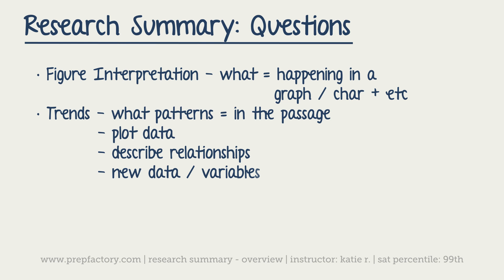So for trends, you need to be able to figure out: as one thing increases, what happens to another? If I double this, do I double something else? Understanding relationships and being able to put new information into the same tables or equations to figure out what happens. The next type is reasoning, which requires putting your thinking cap on — it's all about your ability to analyze information and figure out why the experiment was done the way it was, and what could be done next.